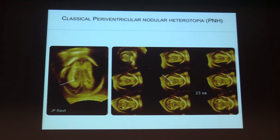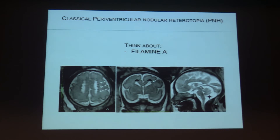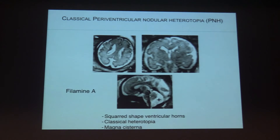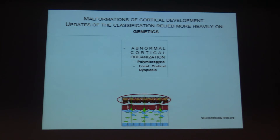You can have heterotopia — this particular aspect with little nodules in T2 hyposignal lining the ventricle. When you have this squared aspect of the ventricular horns and an enlargement of the posterior fossa, you must think about the filamin A mutation. But once again, the most important thing is not to make a definitive diagnosis but to correctly recognize all morphological anomalies. Here is another example of heterotopia.